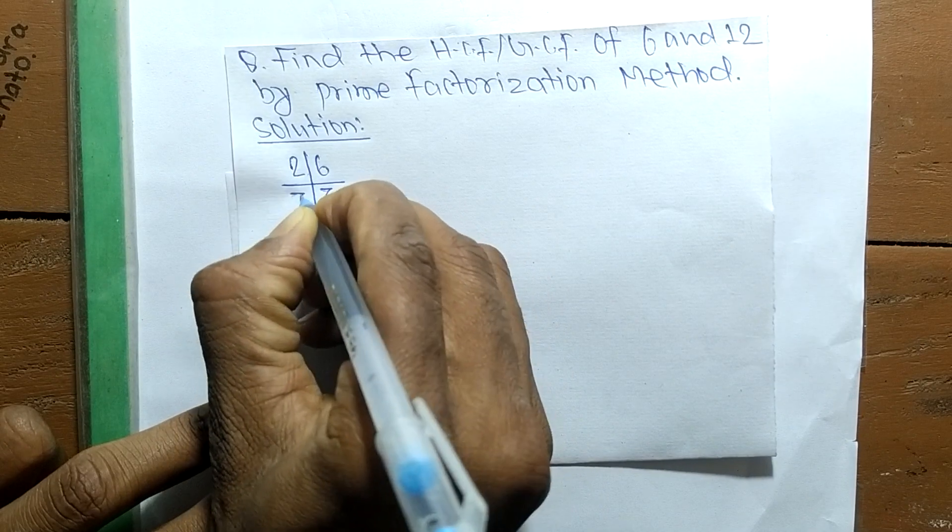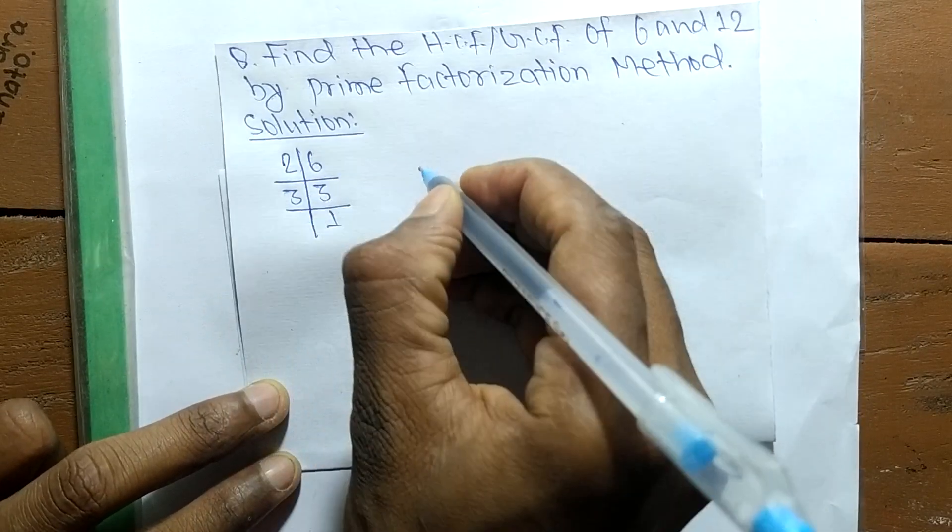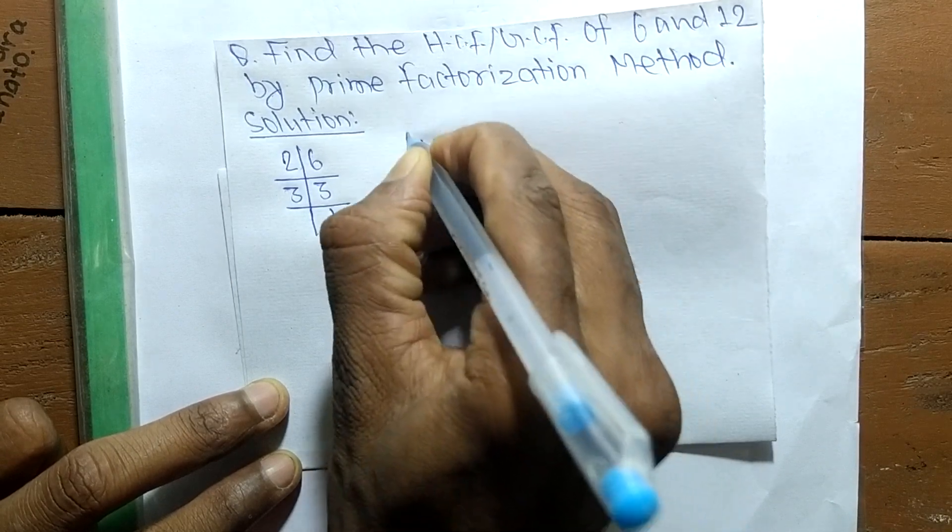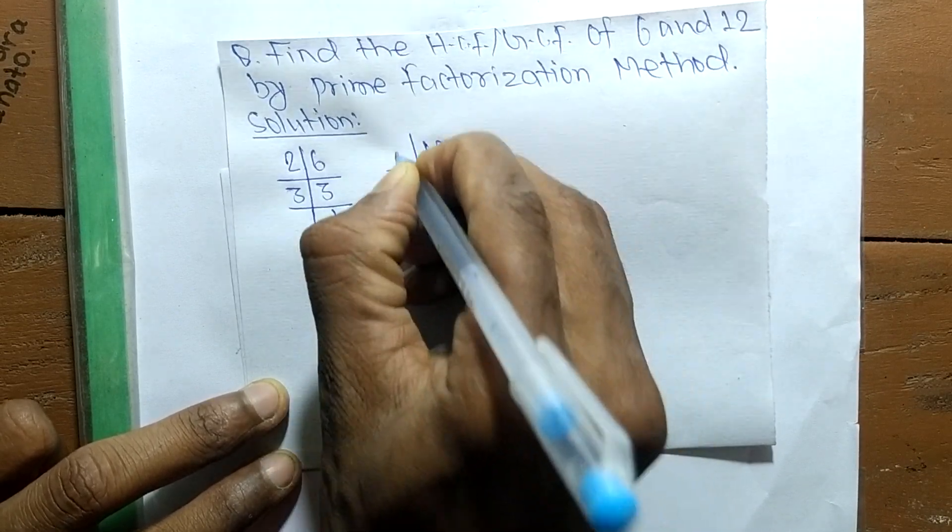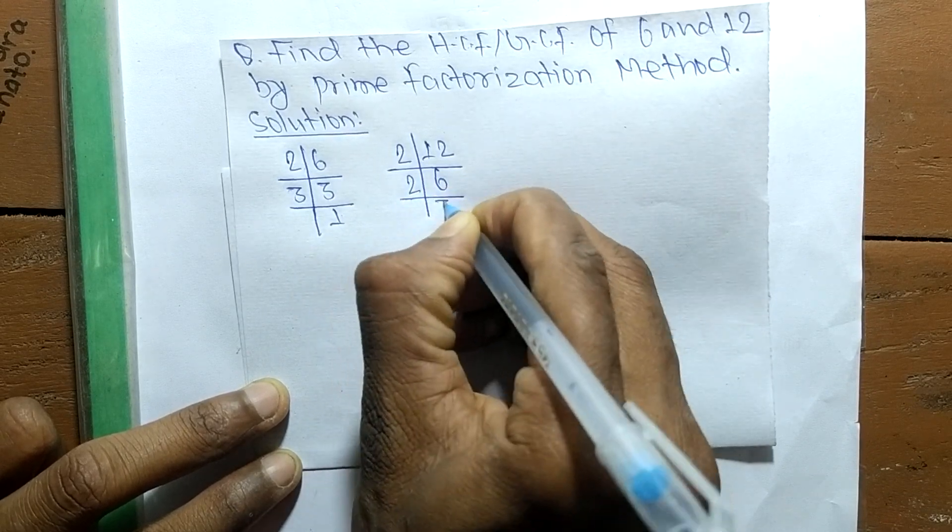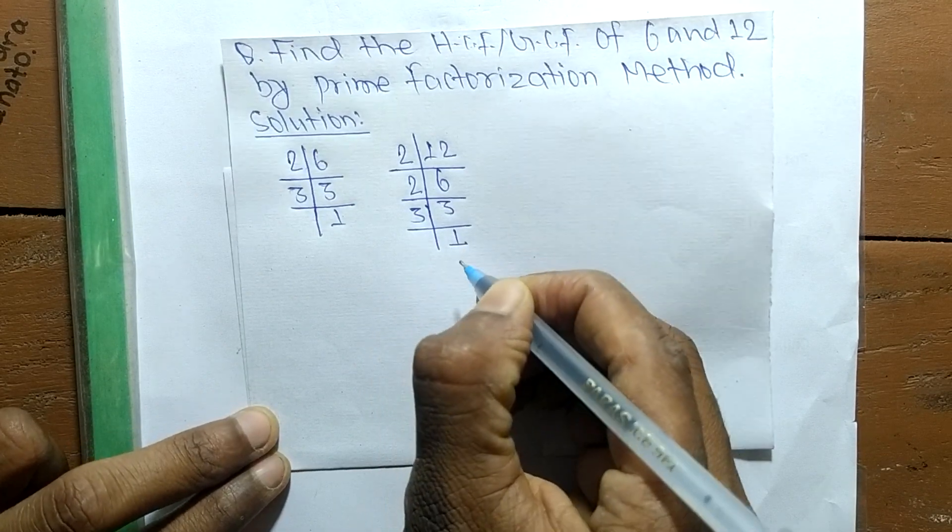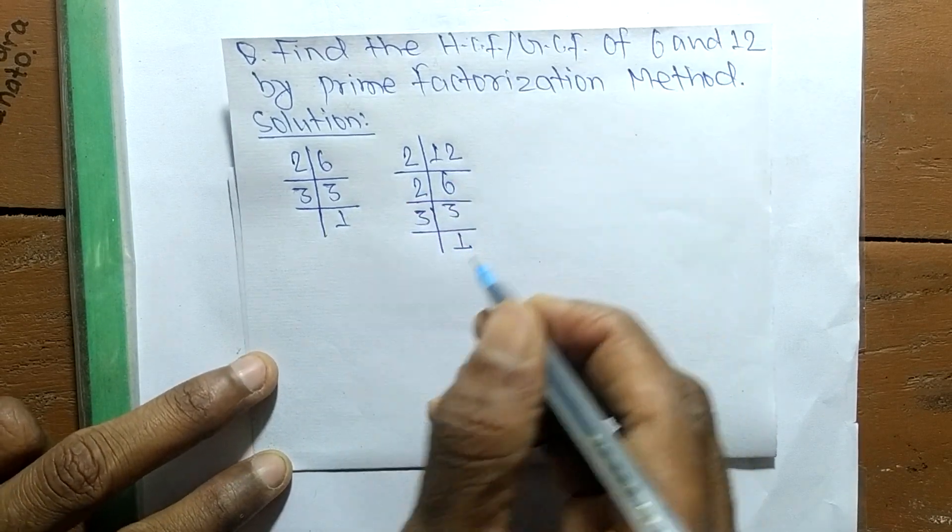In the same way, the prime factors of 12 are 2 times 6 means 12, 2 times 3 means 6, and 3 times 1 means 3. So from these prime factors...